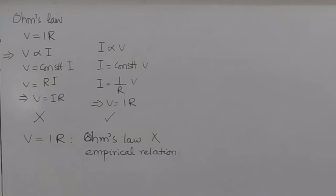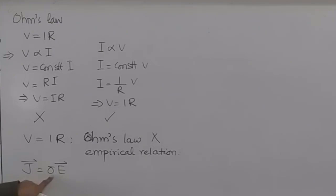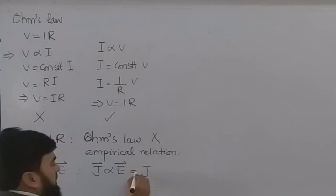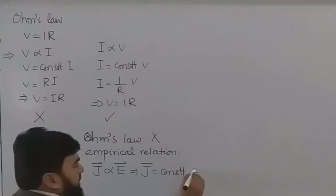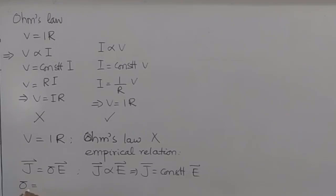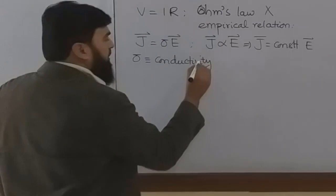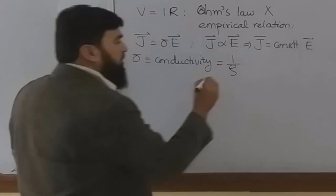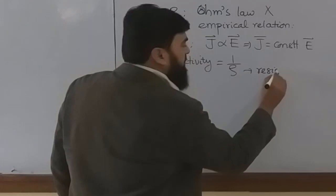Why? The actual Ohm's law is J equals sigma E, where J is the current density, sigma is the conductivity of a material, and E is the applied electric field. So J is proportional to the electric field, and J equals a constant times the electric field. This constant is actually dependent on the material, which we call conductivity, equal to 1 over rho, where rho is called resistivity of a material.